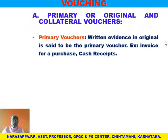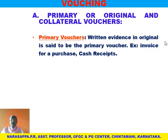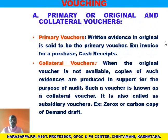What is a primary or original voucher? Written evidence in original is said to be the primary voucher — for example, an invoice for a purchase or a cash receipt. The first time a voucher is created it is called the original voucher.